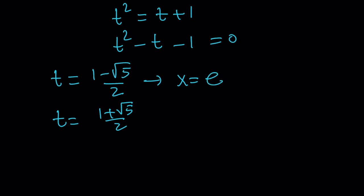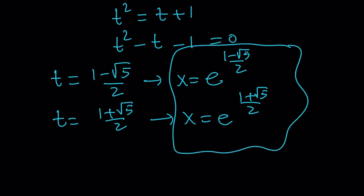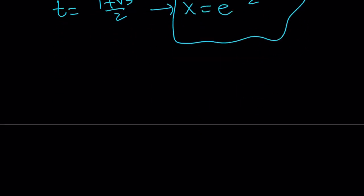You can write the x here as e to the power of 1 minus root 5 over 2. And here you can write it as e to the power of 1 plus root 5 over 2. So those are going to be the solutions just like before. There are two solutions, they're both valid. And now let's go in and take a look at the graph, which will validate our claim about getting two solutions.